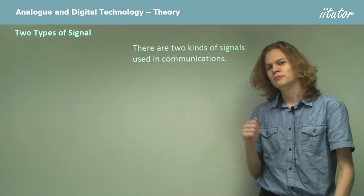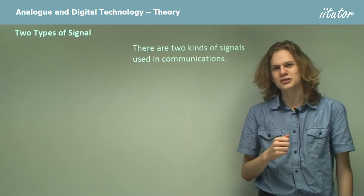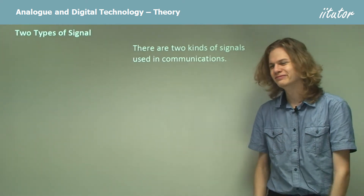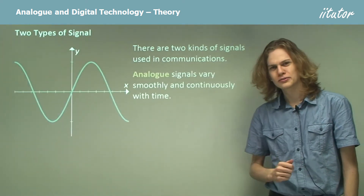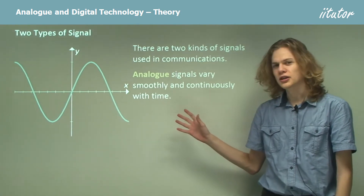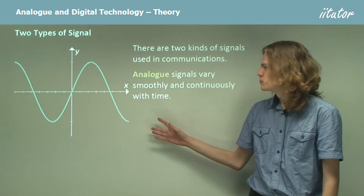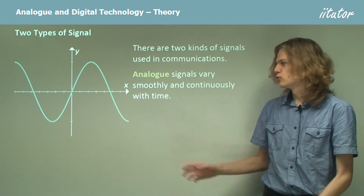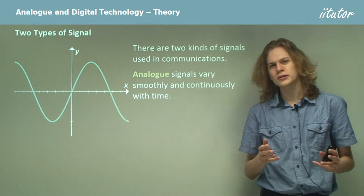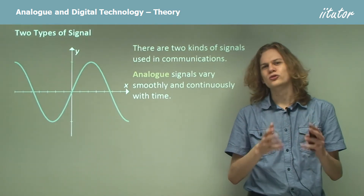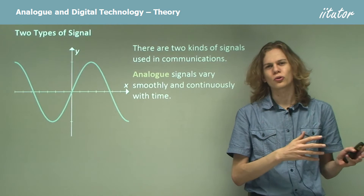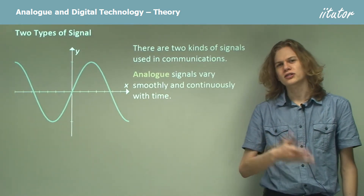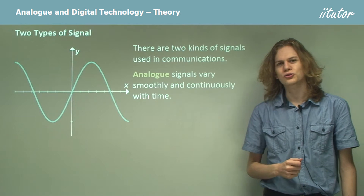There are two kinds of signal used in communication. First of all we have analog signals. Analog signals vary smoothly and continuously with time, so these are the sort of things that might look like a mathematical function. We don't ever get jagged edges or points — it's always nice and smooth and curved if you zoom in close enough.